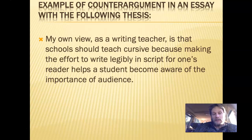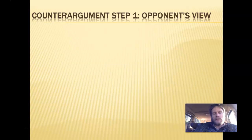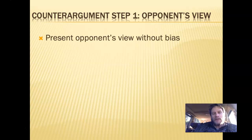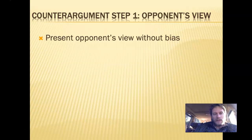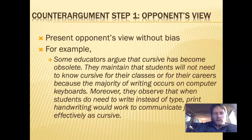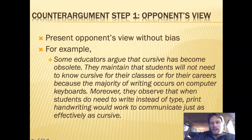The first step of the counter argument is presenting your opponent's view without bias — you're not giving your own slant or opinion. For example: some educators argue that cursive has become obsolete. They maintain that students will not need to know cursive for their classes or careers because the majority of writing occurs on computer keyboards. Moreover, they observe that when students do need to write instead of type, print handwriting would communicate just as effectively as cursive.